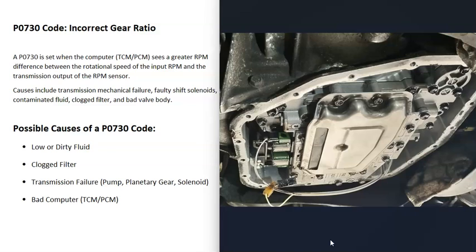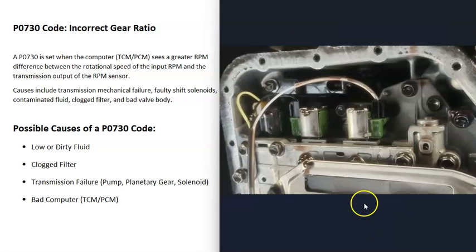Another possible cause is some kind of internal transmission failure — things like a bad pump, a bad planetary gear, or a bad shift solenoid. Something has failed inside the transmission, causing the vehicle not to shift correctly. Usually if there's a specific internal failure like a bad shift solenoid, you'll also get a separate code for that component.